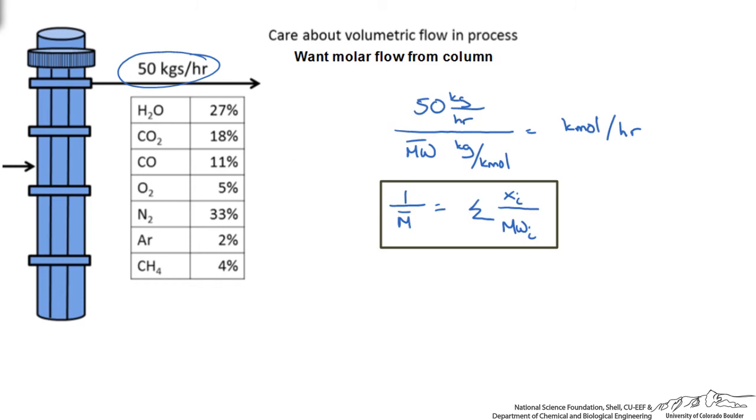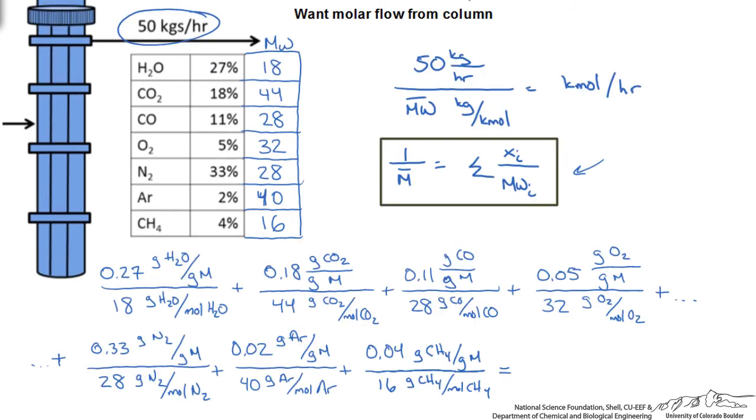Obviously we are going to need the molecular weight of each component, so I am going to start looking those up and filling them in our table. Here are the molecular weights for each of the gas species and we basically follow this equation where we take the mass fraction and divide it by its molecular weight and then we sum all these up. The summation of all my products is going to be equal to 1 over the average molecular weight.